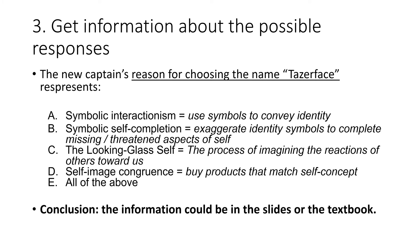Taking this information, I then look at the possible answers. We have four different concepts. Symbolic interactionism is the use of symbols to convey identity. Symbolic self-completion is the exaggerated use of identity symbols to complete missing or threatened aspects. The looking-glass self is the process of imagining the reactions of others towards us. And self-image congruence is when we buy products that match our self-concept. This information can be found in the slides from our personality and self-concept lecture, or in the textbook.